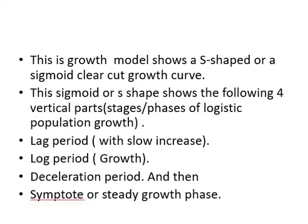On slide number six you can see the logistic growth model. In the S-shaped or sigmoid curve, the following vertical parts or stages can be seen in growing individuals: a lag period with slow increase in growth, a log period where growth is moderate, a deceleration period, and then an asymptote or steady-state growth phase in the population.